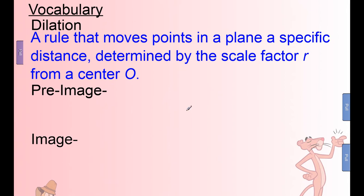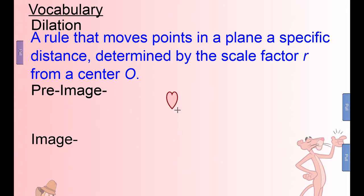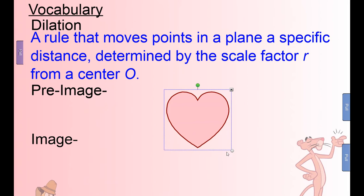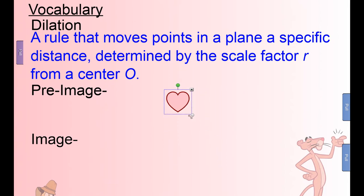So if I take a shape here — there's a heart — if you imagine pinching and zooming, that is a dilation. Everything got bigger by the same amount. It didn't get squashed. It didn't get stretched in one direction or another. It's proportionally larger. And dilating smaller and smaller — that's still a dilation.